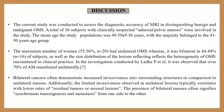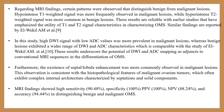Bilateral cancers often demonstrated increased invasiveness into surrounding structures compared to unilateral masses. The limited invasiveness observed in unilateral lesions typically correlates with lower rates of residual tumors. The presence of bilateral masses often signifies synchronous tumorigenesis and metastasis from one side to the other. Regarding MRI findings, certain patterns distinguished benign from malignant lesions: hypointensity on T1 signals was more frequently found in malignant lesions, whereas hyperintensity on T2-weighted signals was more commonly found in benign lesions.